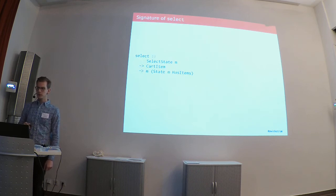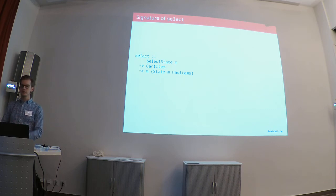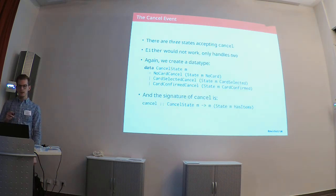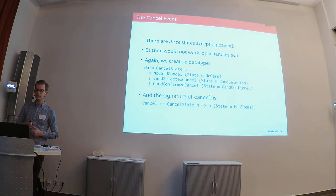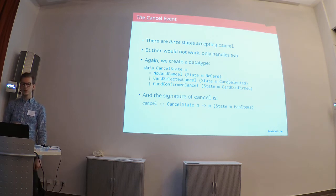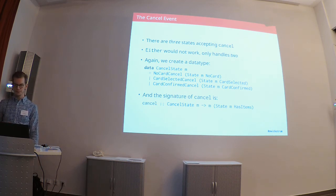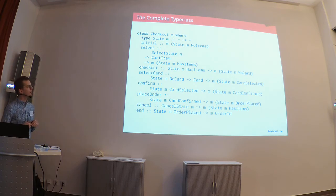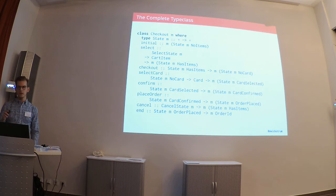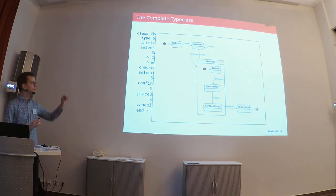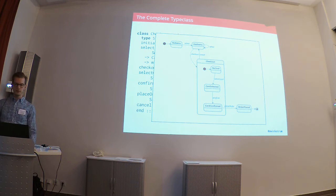Similarly, there are three states accepting Cancel instead of two as with Select, so we create a similar sum type with three constructors and pass that to Cancel. Here is the complete type class in one go. Even if you don't understand everything going on here, this is very one-to-one with the diagram from before — it shows most of what's in the diagram in a very nice way.